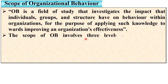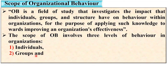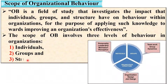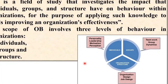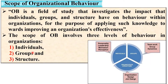The scope of OB involves three levels of behavior in organizations. First, individuals; second, groups; and third, structure. These are the three scopes of OB. Now let us see briefly these three important levels.